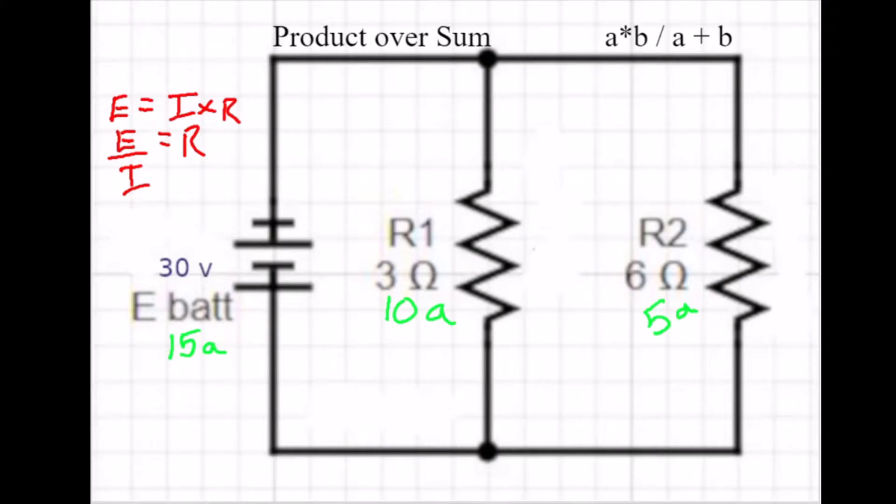So if we plug those numbers in, we have E, which is 30, divided by I, which is the current, which is 15, and that's going to give you 2 for the equivalent resistance, and that's going to be in ohms.